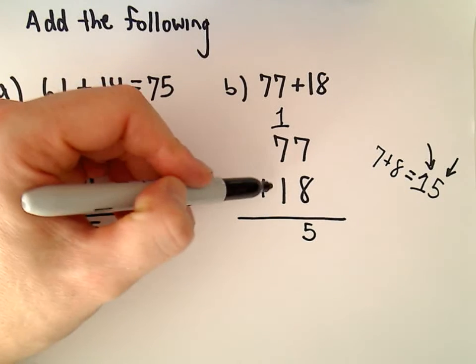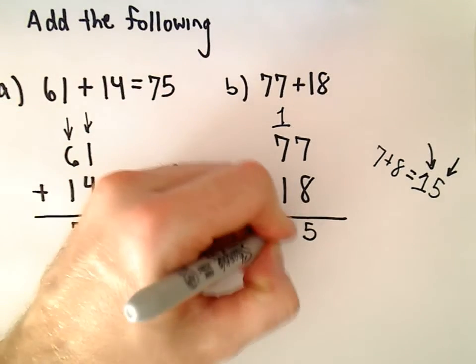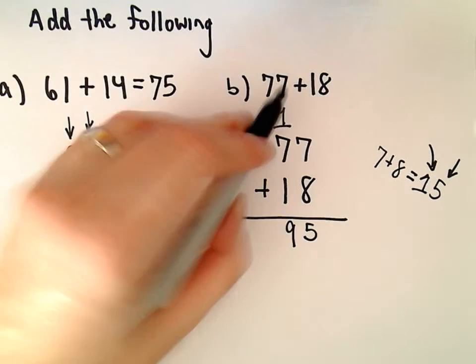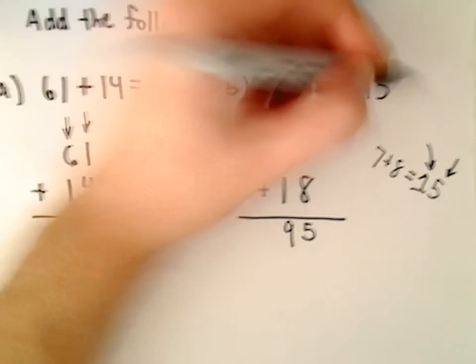So then I'm just going to add everything in my column. So 1 plus 7 is 8, plus 1 is 9, and 77 plus 18 is going to give us 95.